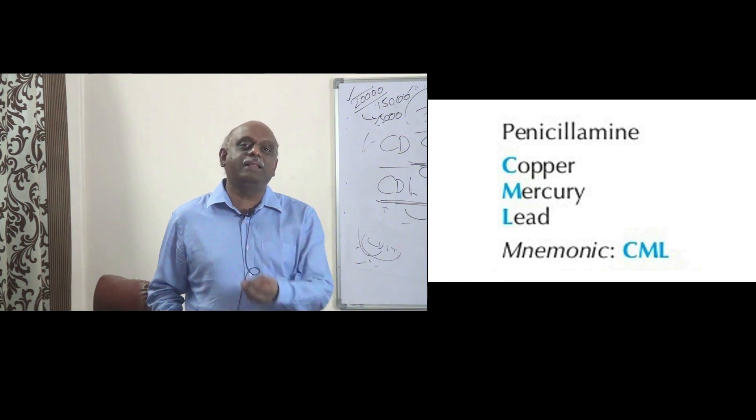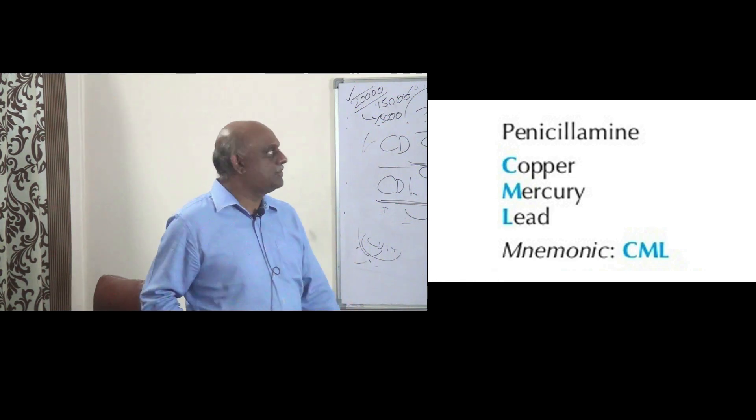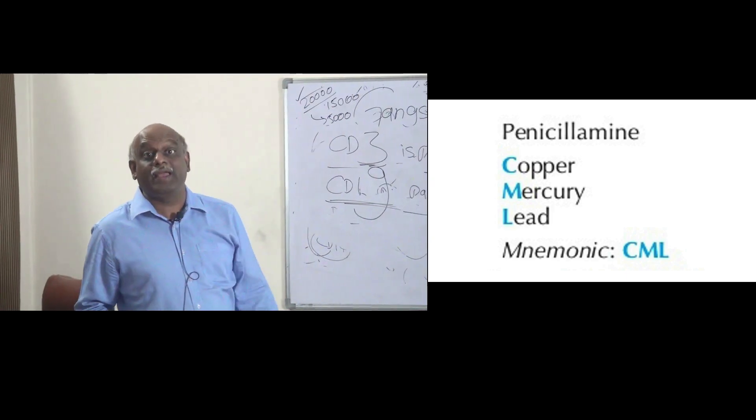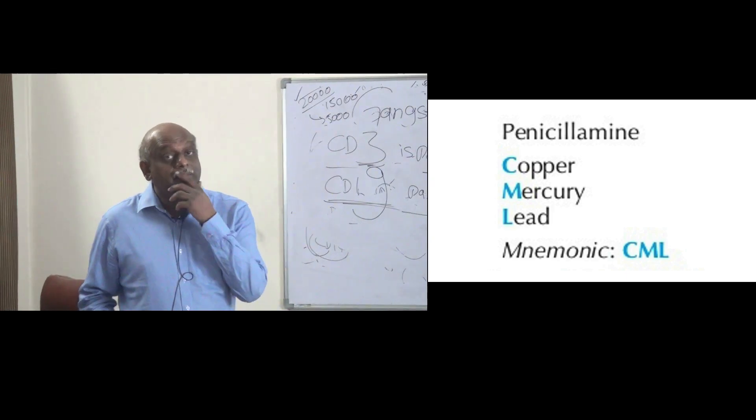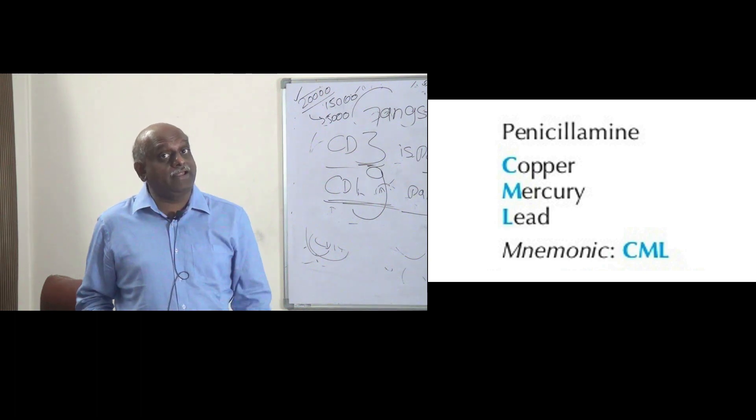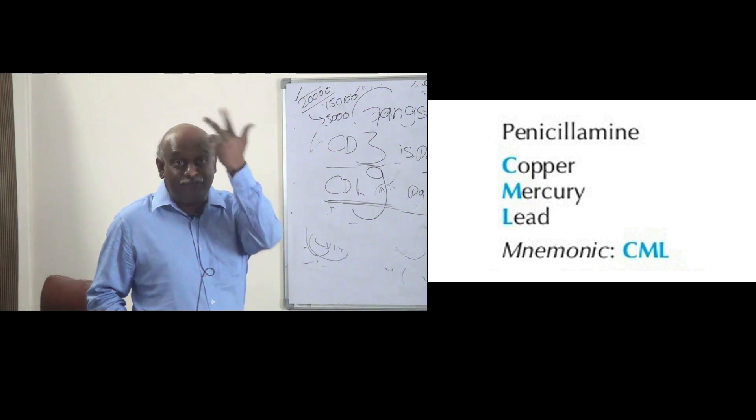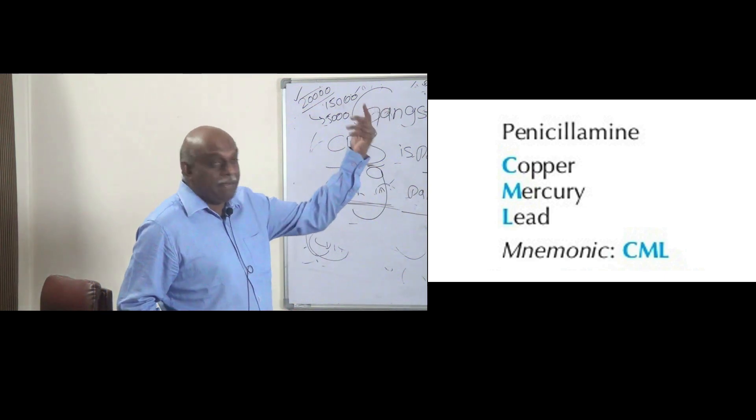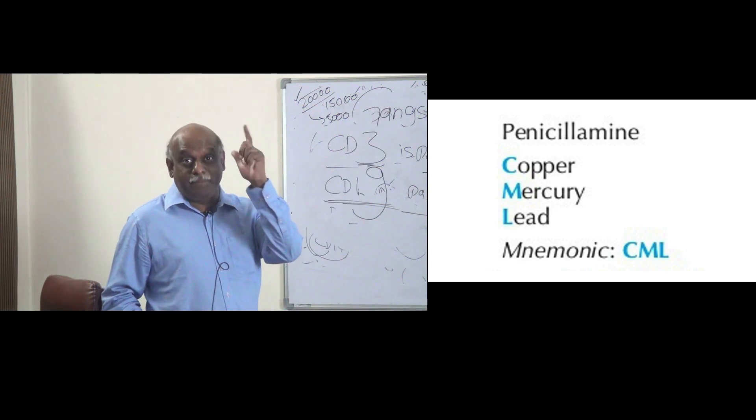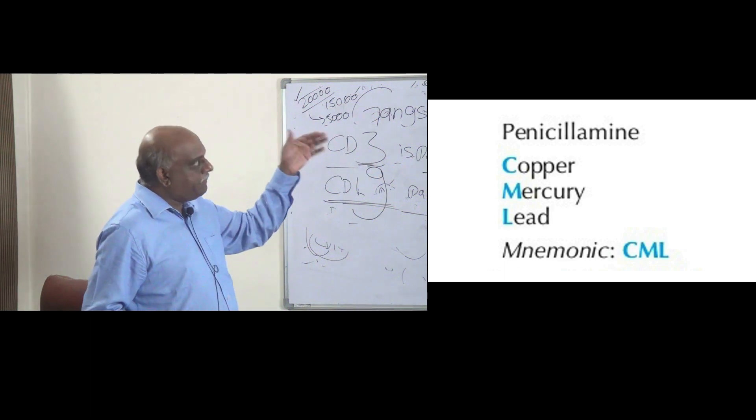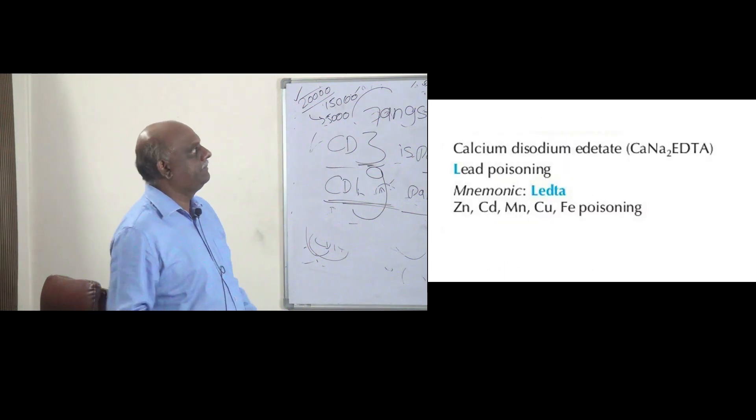What is the famous CML that you know, chronic myeloid leukemia? C for copper, M for mercury, L for lead is where penicillamine is used. But how will you remember penicillamine and CML? CML may hota hai Philadelphia chromosome. Uska spelling bhi P hota hai. So the big P you remember. Penicillamine is CML: copper, mercury, and lead.